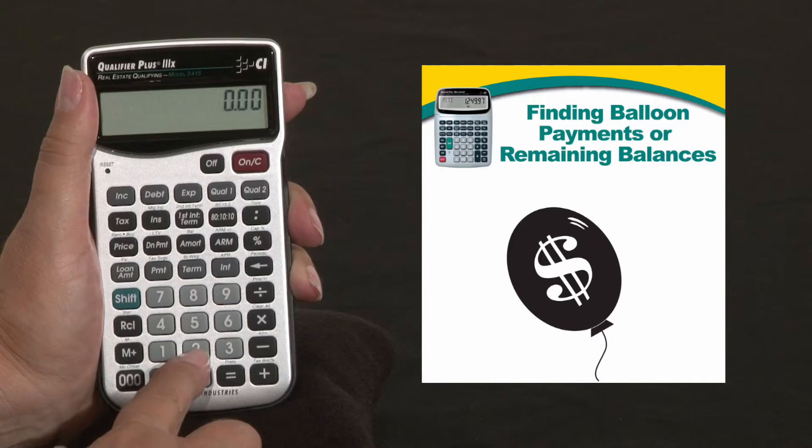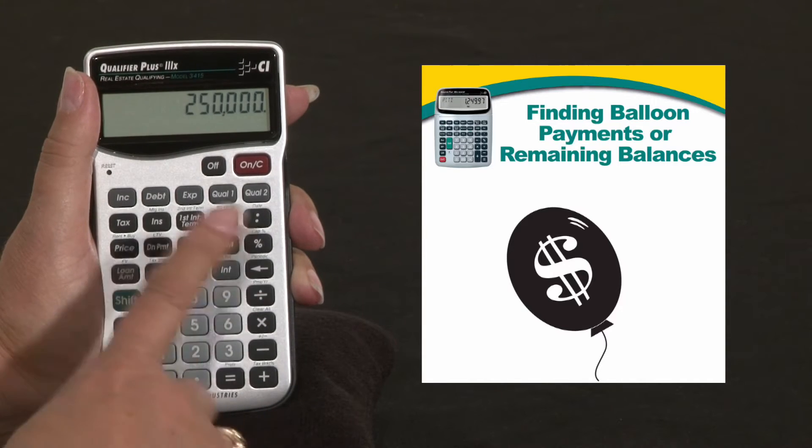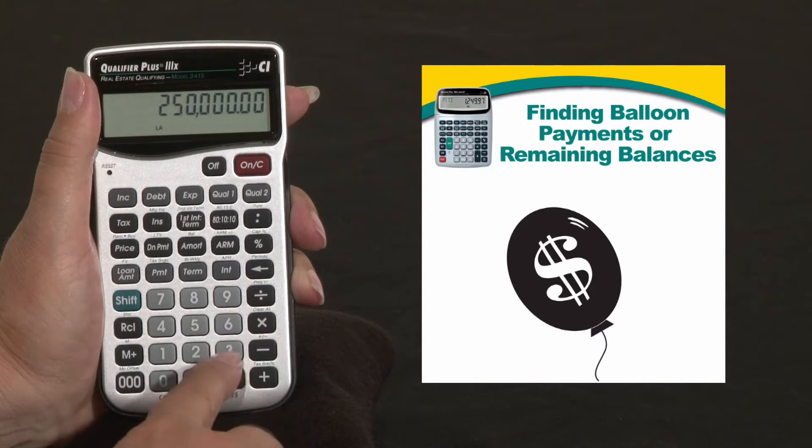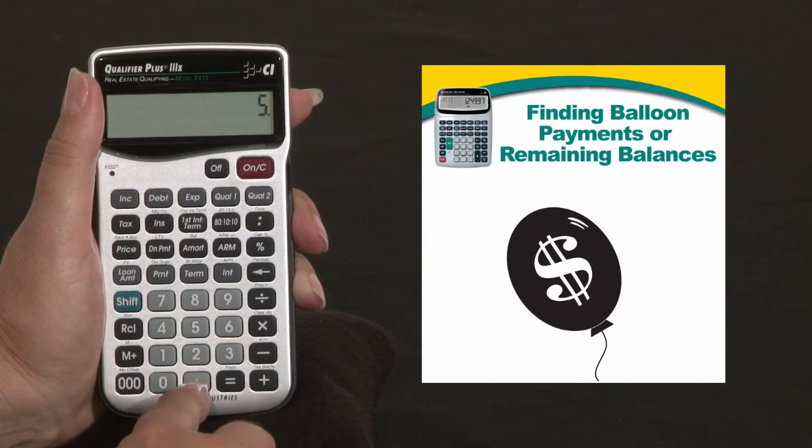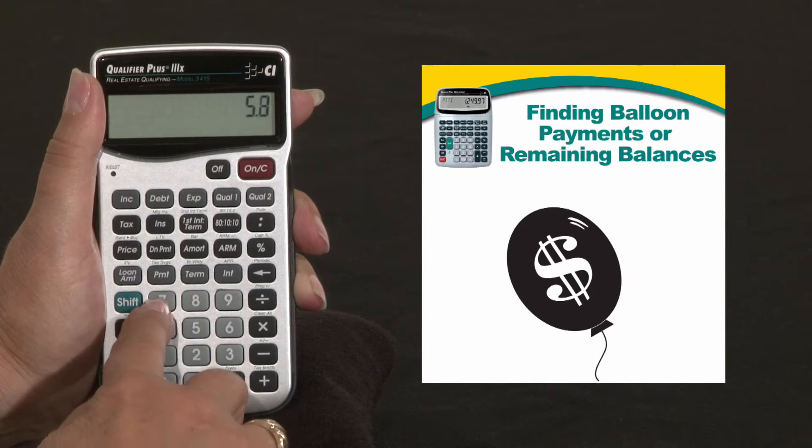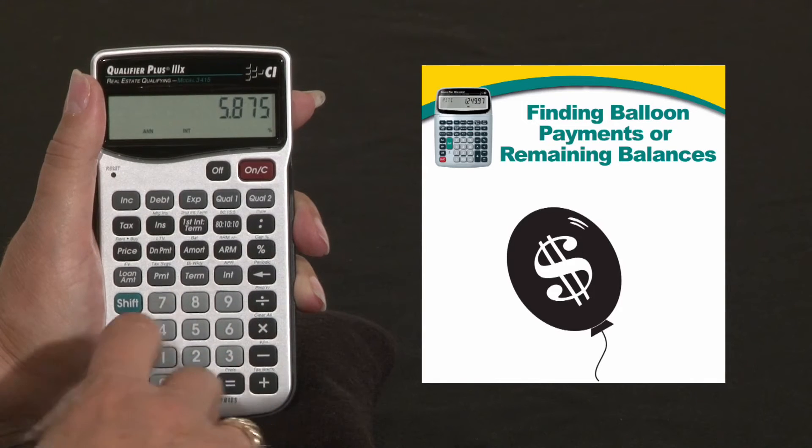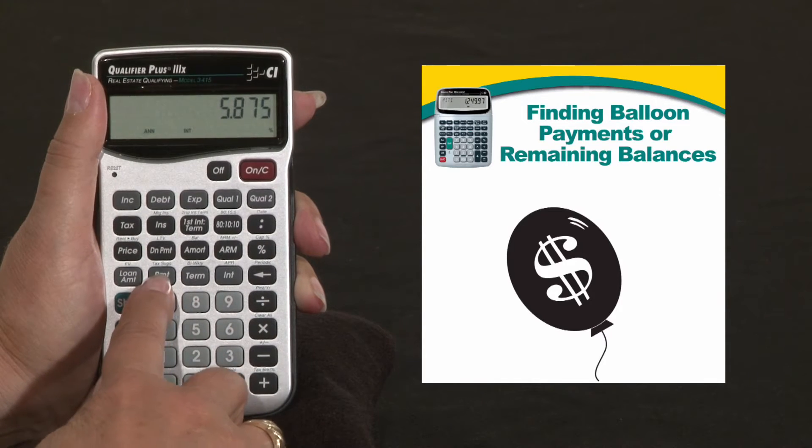So with this calculation, let's enter a $250,000 loan amount, we'll do our 30 years as our term, we'll give it a 5.875% interest and we can solve for our payment.